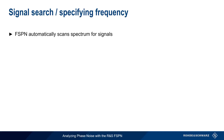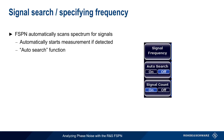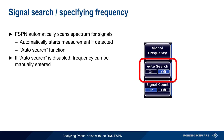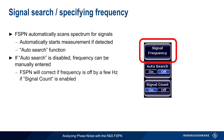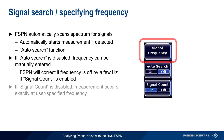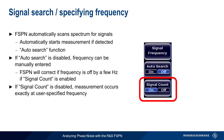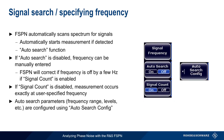When started, the FSPN automatically scans the spectrum looking for a signal. If one is detected, the measurement starts automatically. This auto-search function is enabled by default. If auto-search is disabled, the frequency can be manually entered using signal frequency. Even if the frequency is manually entered, the FSPN will correct small frequency errors as long as signal count is enabled. Disabling signal count causes the FSPN to measure at exactly the user-specified frequency. The parameters used in auto-search, such as the frequency range to check and the required levels, can be configured using auto-search config. This function also allows you to define a capture range for tracking a drifting signal.